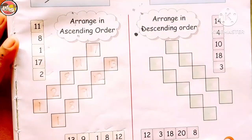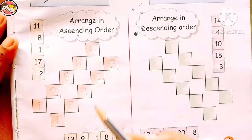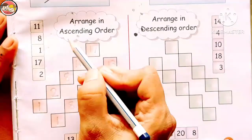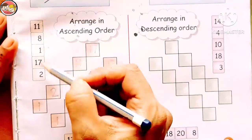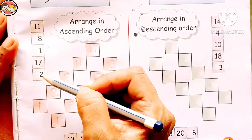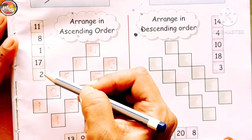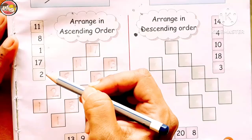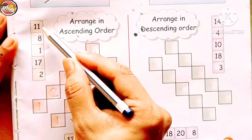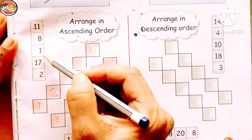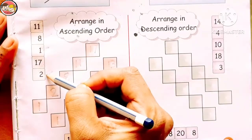Now children, let's move on to the example. Arrange in ascending order. Look here — there are a few numbers that we have to arrange in ascending order. Ascending order means arranging numbers from smallest to largest. So let's begin. The numbers are 11, 8, 1, 17, and 2.